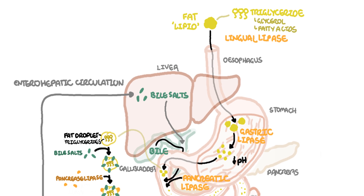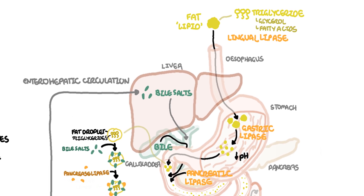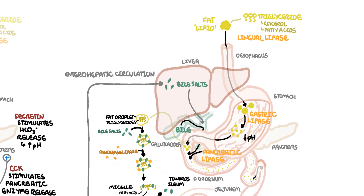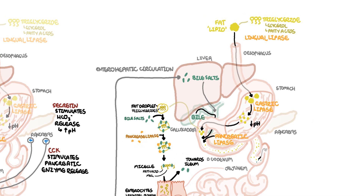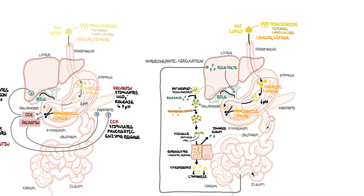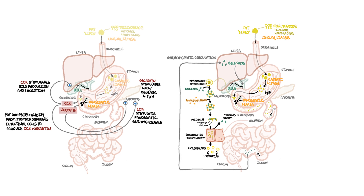So in summary, fat digestion begins with lingual lipase and gastric lipase until it enters the small intestine where it comes into contact with bile salts and pancreatic lipase. Fat is absorbed as fatty acids and monoglycerides in the jejunum, and the bile salts get recycled through the enterohepatic circulation. Fat is packaged up as chylomicrons in the small intestine before being transported via the lymphatics into the general circulation.